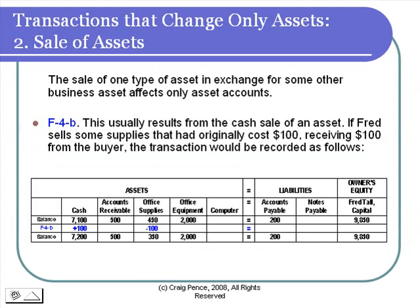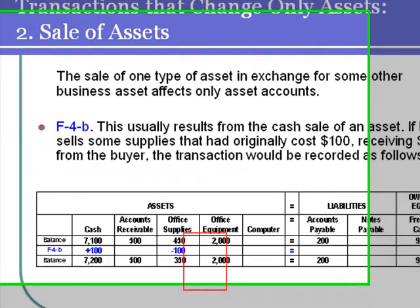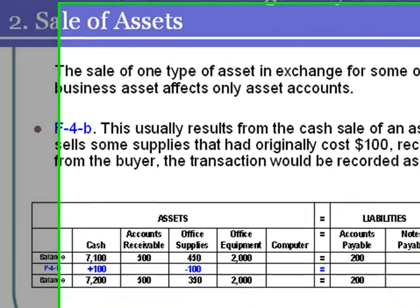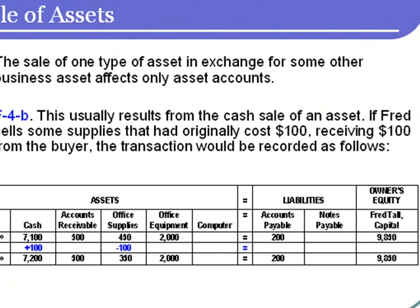The supplies cost us $100, so when we give them to the other party, we need to reduce the balance in the office supplies account, and then we can increase the cash account and record the receipt of the payment. The composition of the assets has changed, but the total assets have not, and that means the equities in the business have not changed either.